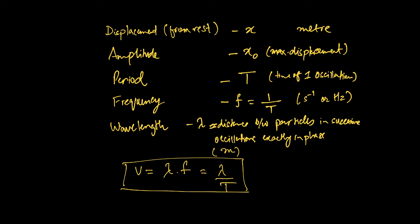For example, if the frequency of a sound wave is 280 hertz — say someone honks a car horn — and the speed of sound is 300 meters per second, you can work out what lambda would be using the wave equation. I'll leave that one for you to do at home. That is how you figure out the wavelength of a sound wave.